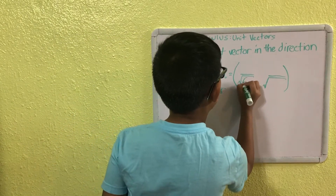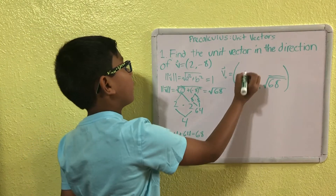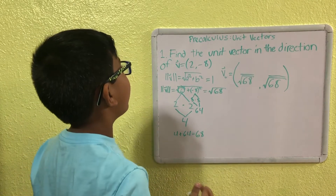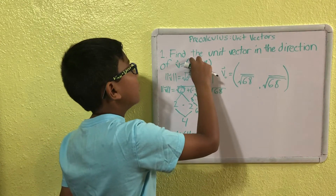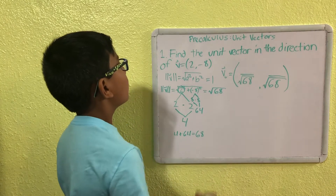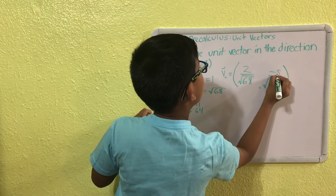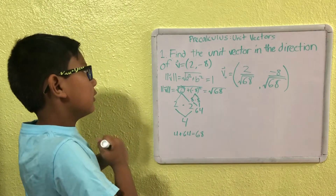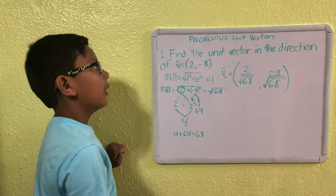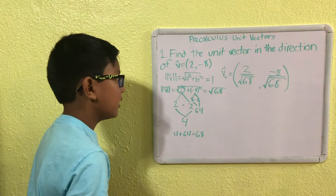Now to solve for the numerator, we take the component values and place them on top of their corresponding fractions. We have a 2 here, so we stick it up as the numerator, and negative 8 here, so we stick that up. The unit vector in the direction of vector V equals (2, −8) is equal to 2 over √68, comma −8 over √68.